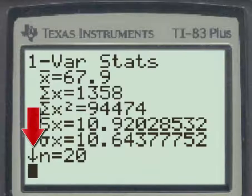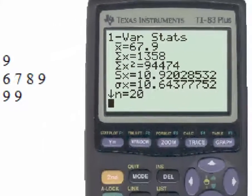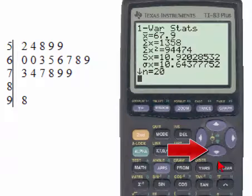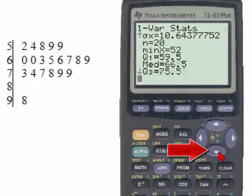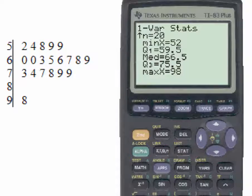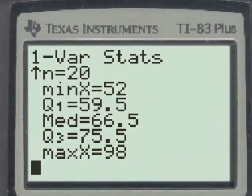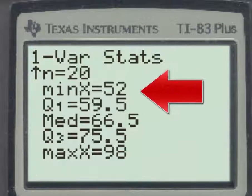This down arrow tells us that if we use the blue down arrow on the calculator, we have more information available to us.